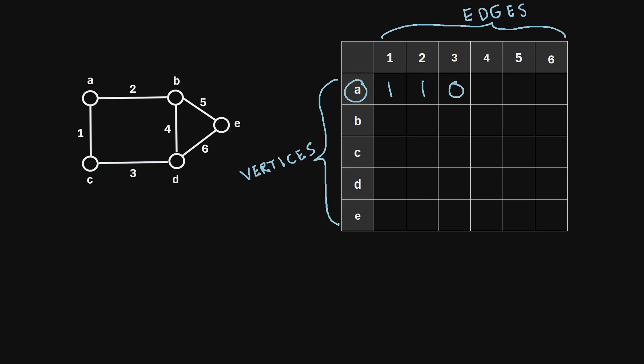And then we'll ask, is vertex A incident with edge 4? If we look at our graph, we can see that it is not. Edge 4 is not connected to vertex A, so we'll give this box a 0. And then we'll move on to edge 5. Is it incident with vertex A? We can see that it is not, so we'll give that a 0.